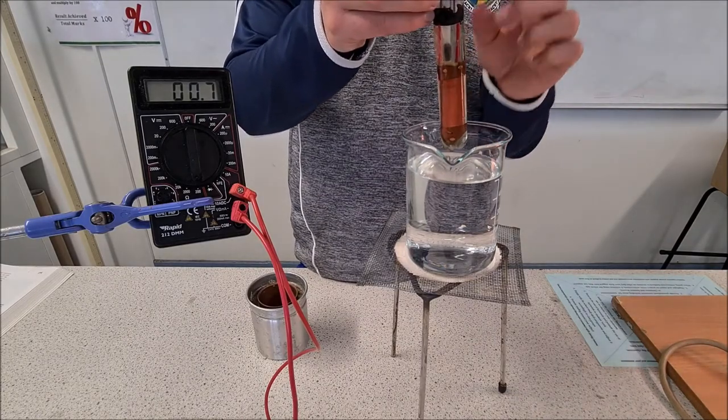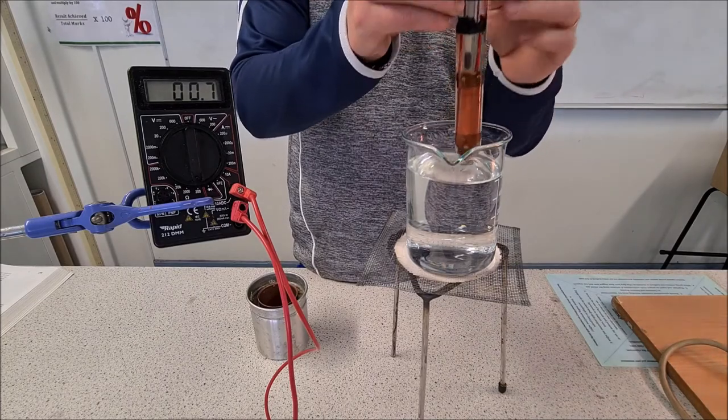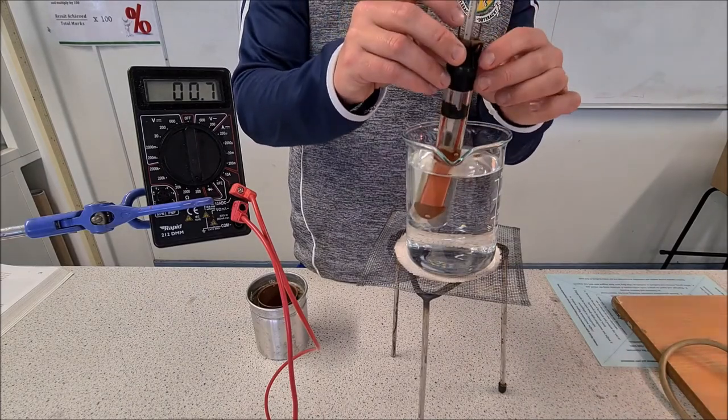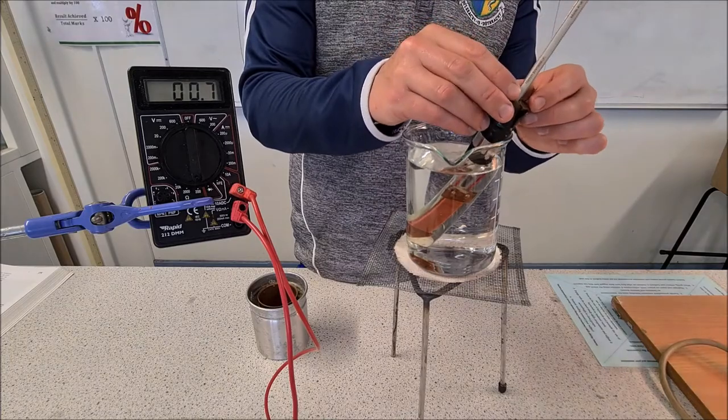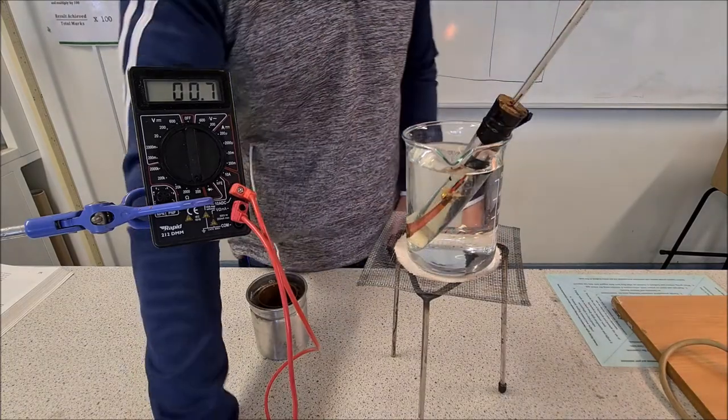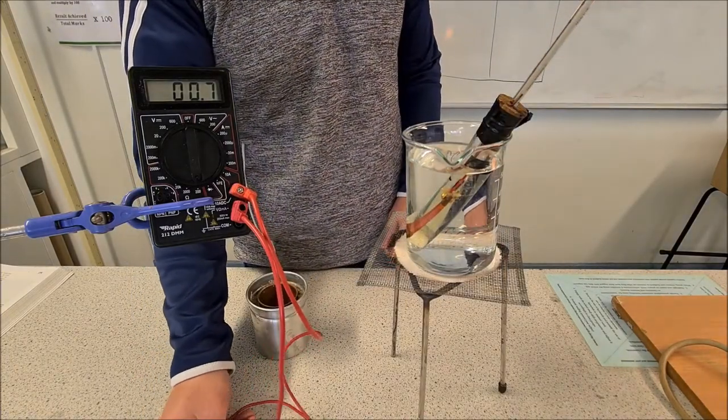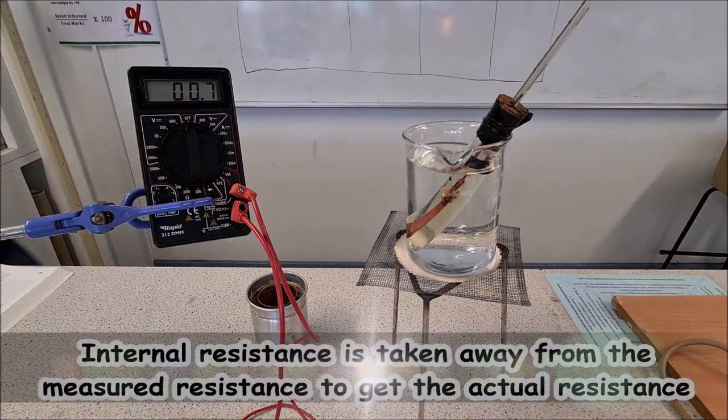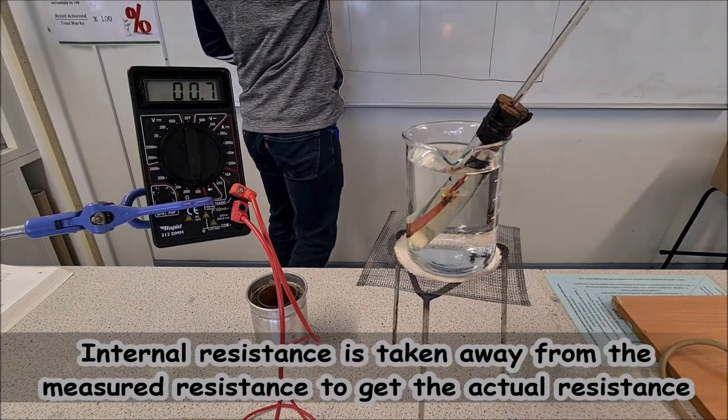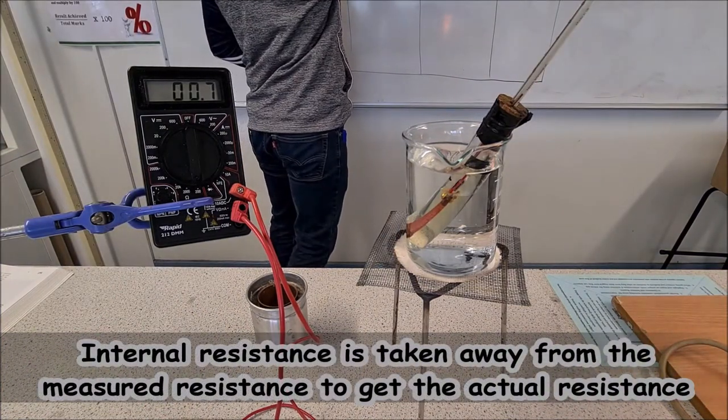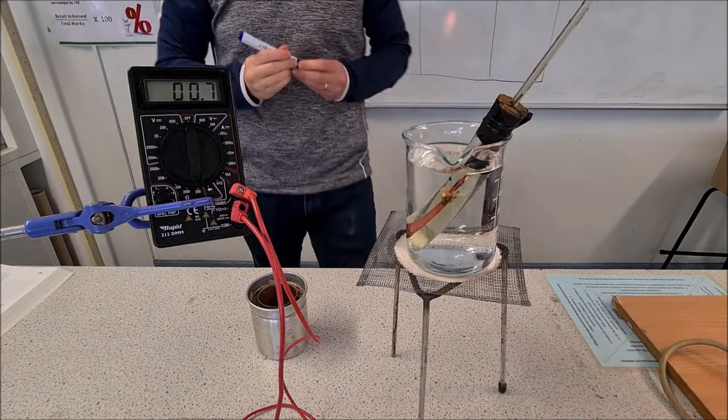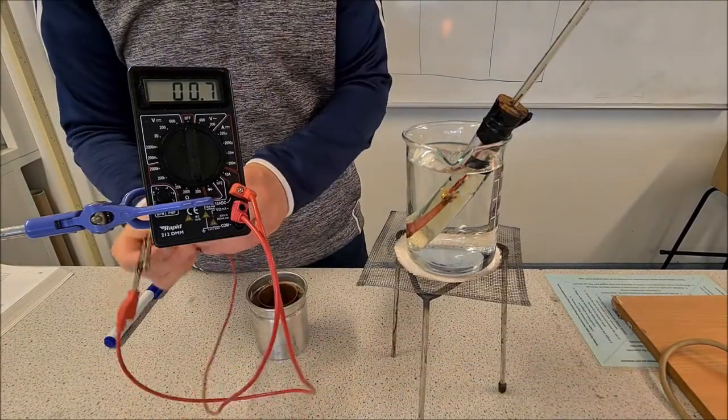We have the thermometer going in and we have the probes coming out here that we'll attach our ohmmeter onto. First we need to get the internal resistance of the ohmmeter. The internal resistance is 0.7 ohms and we're going to connect it up to get our initial reading.